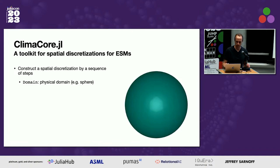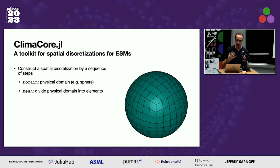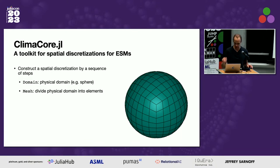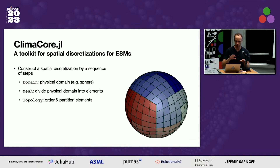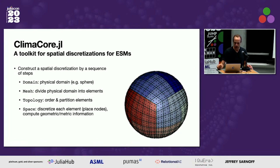We do it by a sequence of steps. First you define a domain — for example, a sphere. Then you define a mesh on that domain, which breaks it up into what we call elements or cells. Beyond that, we add another layer called topology, which orders and partitions the elements. This is where you start doing distributed computing — you need this to say what's connected to what and how information gets passed between those things.